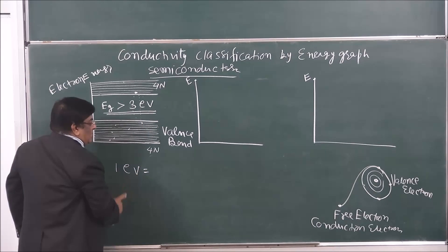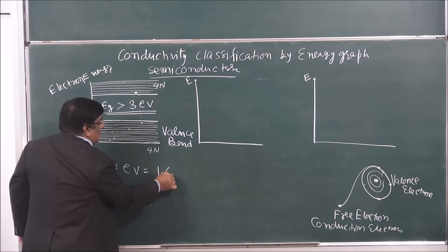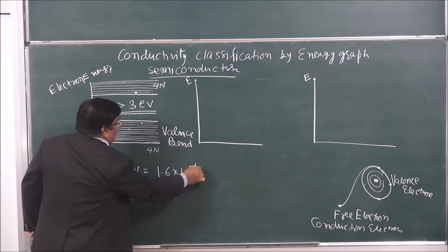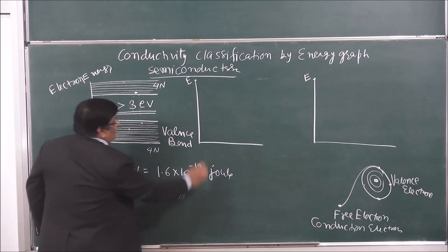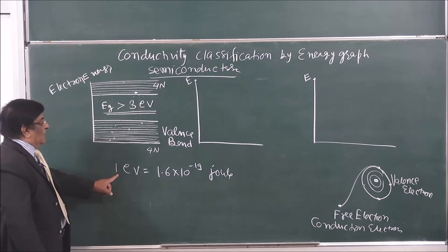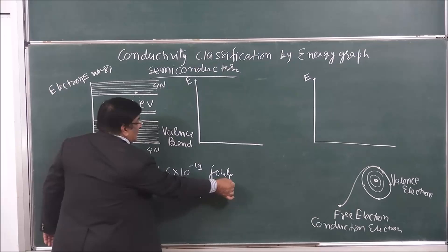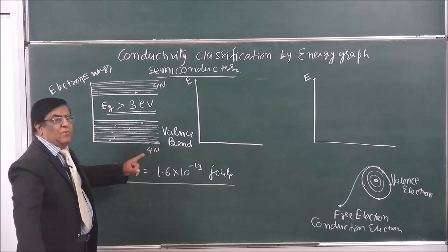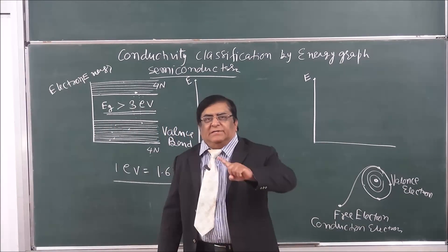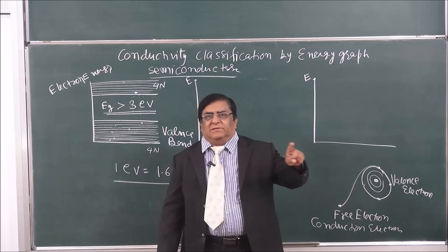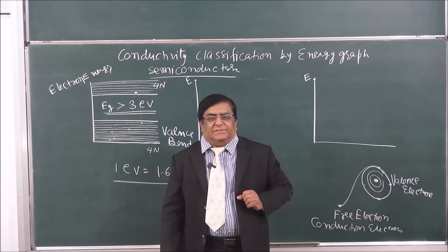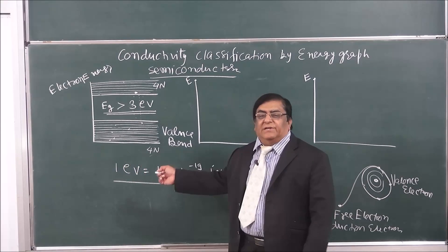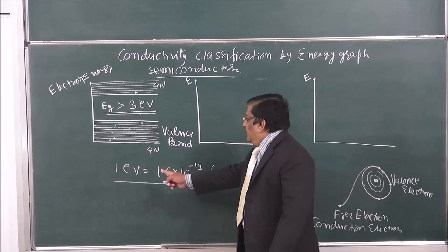One electron volt is a unit of energy equal to 1.6 × 10⁻¹⁹ joules — that is, one electron charge multiplied by one volt. Please remember this unit because in all upcoming chapters — atoms, nucleus, electrons — wherever we deal with very small amounts of energy, we will use electron volts.